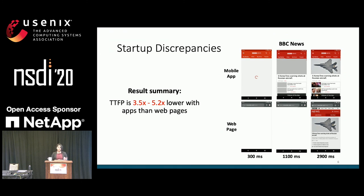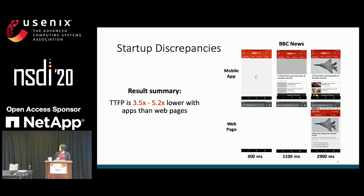Screenshots show a representative example: the BBC News app is able to quickly render content on screen at about 300 milliseconds, while the web page is still blank well past one second into the load.